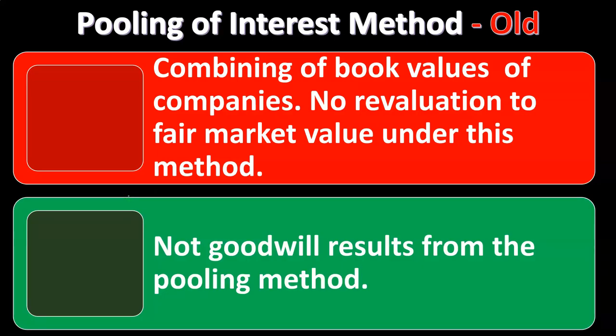If you're doing some type of combination, they probably already revalued all the assets to come up with the terms of the agreement. But now you're going to have to put that into the accounting. Instead of just pooling the information together on a book value basis, if you eliminate the pooling method, you're going to have to revalue the assets — and that can be a cumbersome situation, requiring appraisals and estimates depending on the type of property.